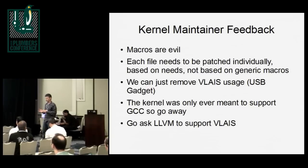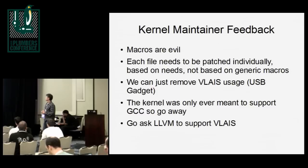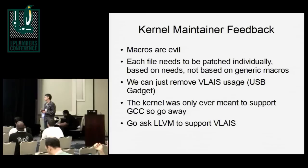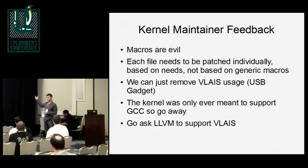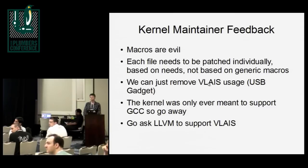Each file needed to be patched individually based on needs. In some cases the maintainers were amenable just to not using the arrays inside structs, to just take them out and rewrite the code. In other cases we found that you could just use a flexible array member. There were different solutions to the problems in different spots of the kernel. Some people basically said the kernel was only ever meant to support GCC, so it's not our problem. Clang is one of the ones where the error says this extension will never be supported - it's not part of the standard. Apparently it would add considerable complexity and slow down the compiler significantly if it was added.